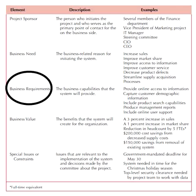The business requirements section allows us to identify all of the capability of the system — the functionality that we need to implement in order to meet the needs that we have already identified.